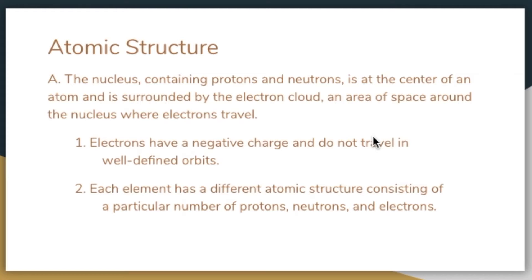Each element has a unique atomic structure consisting of a specific number of protons, neutrons, and electrons. The number of protons and electrons is always the same for a neutral atom of a given element. For example, a lithium atom has three protons and four neutrons in its nucleus, and three electrons moving around it. For neutral atoms, a positive and negative charge cancel each other out, so the number of protons equals the number of electrons. The number of neutrons can vary — that's what we learned with isotopes — giving a different version of that element, but still the same material.